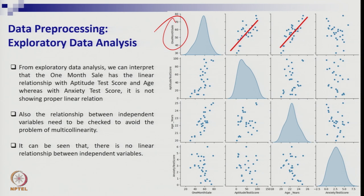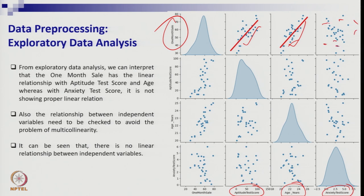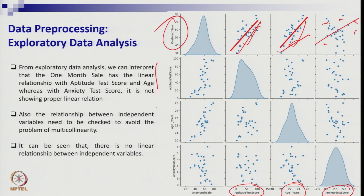From exploratory data analysis on the normalized data, you can see that monthly sales are heavily explained by aptitude test score — it shows a clear trend and good relationship. Age also has a good correlation with monthly sales. However, the anxiety score plot is scattered with no clear relationship, suggesting it will likely not enter the final regression.